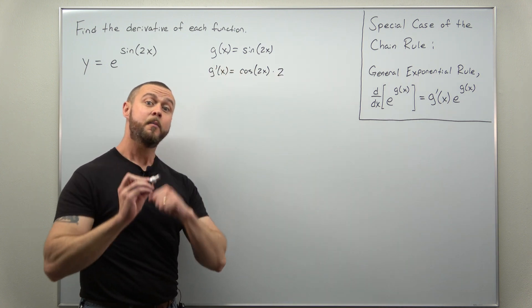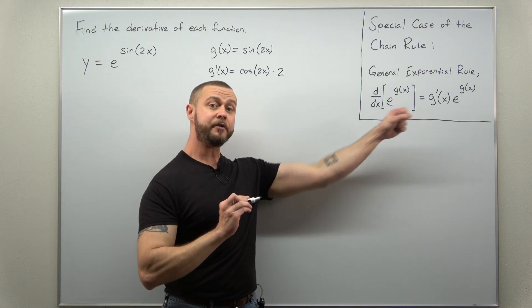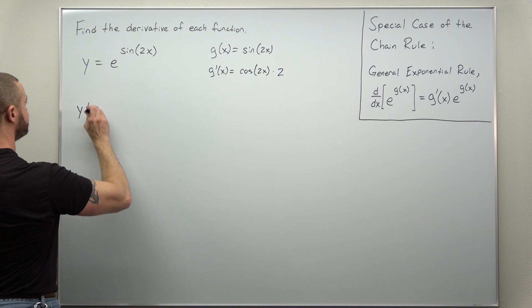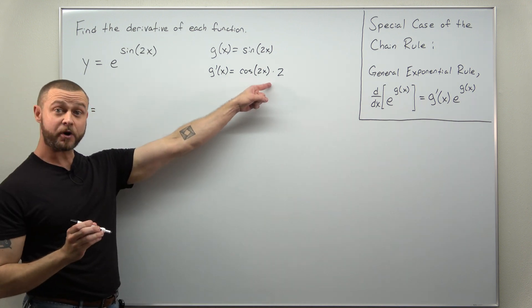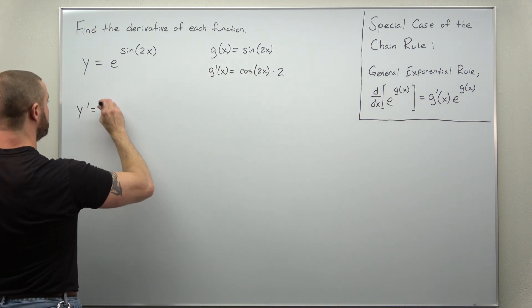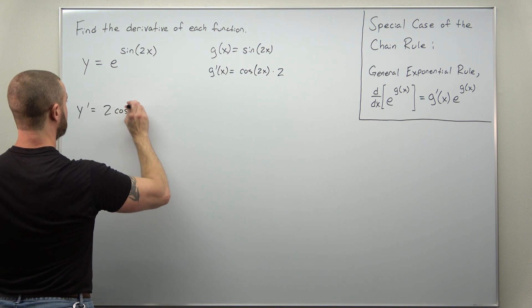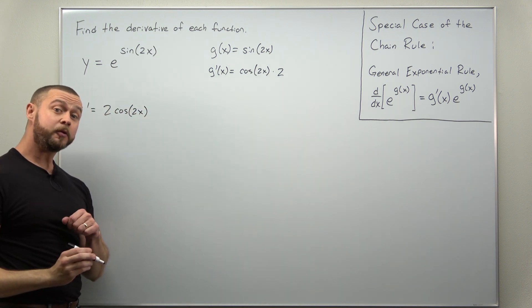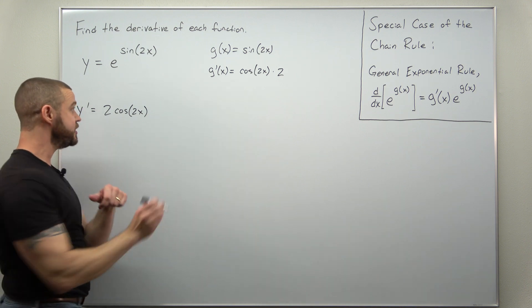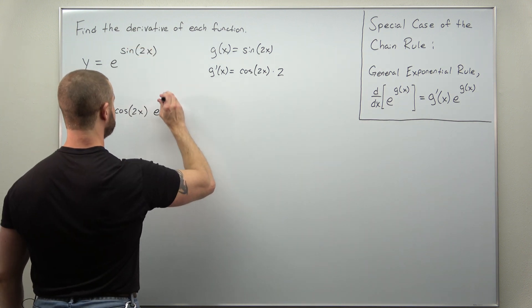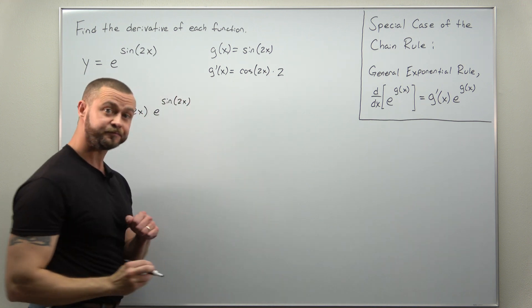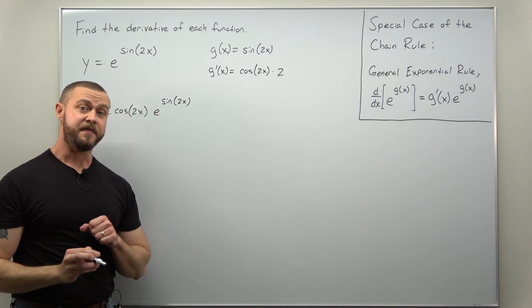And we're basically done. Putting this all together with the general exponential rule, what we get for our derivative y prime, we have g prime, which I'm going to write as 2 times cosine of 2x, and then that just multiplies the original exponential function e to the g of x, which here is e to the sine of 2x. And that's it.